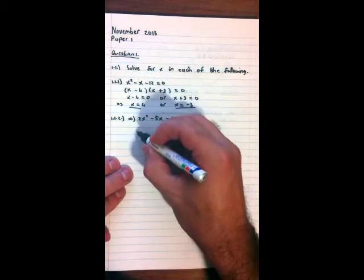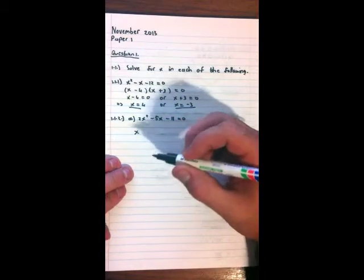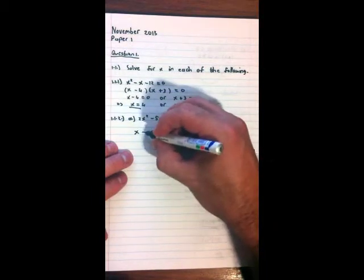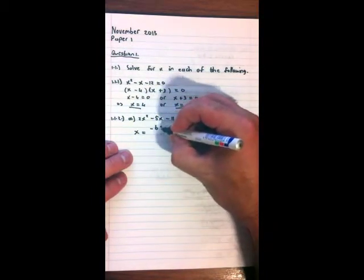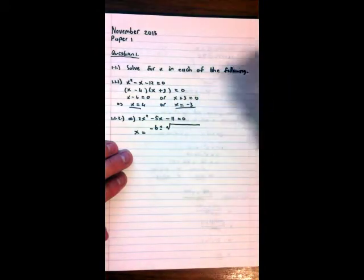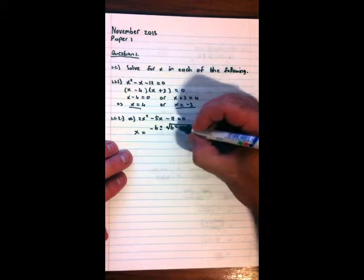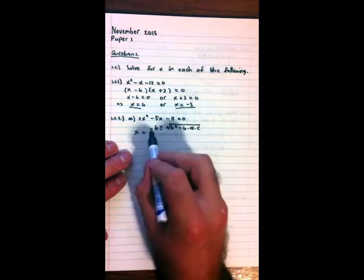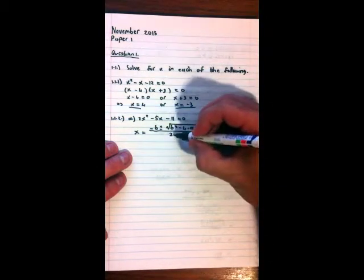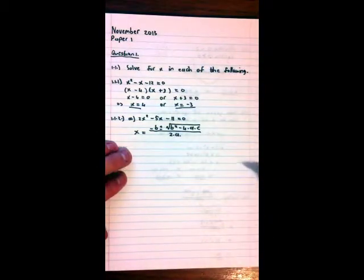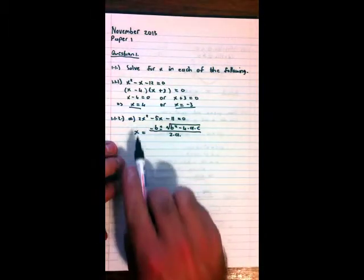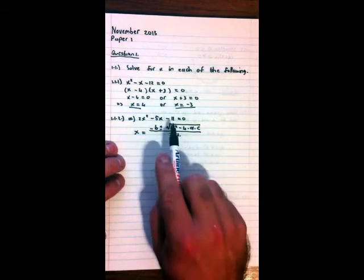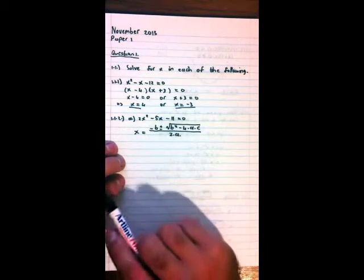What is the quadratic equation? Well, it states that the factors of x, the roots of x in the equation, the roots of the equation, is x = (-b ± √(b² - 4ac)) / 2a. Now, what is a, b, and c? Well, a is the coefficient of the square term, b the coefficient of the x term, and c the coefficient of the x to the power of 0 term, or just the constant.